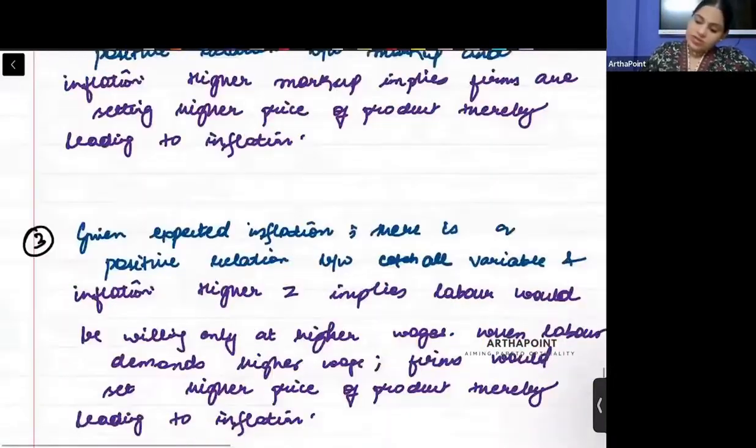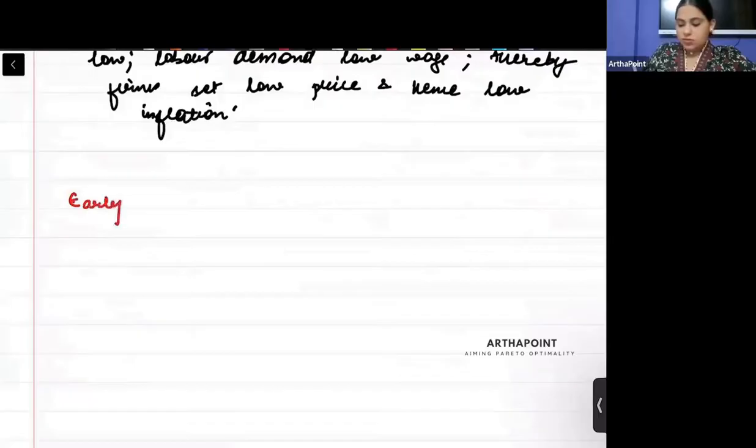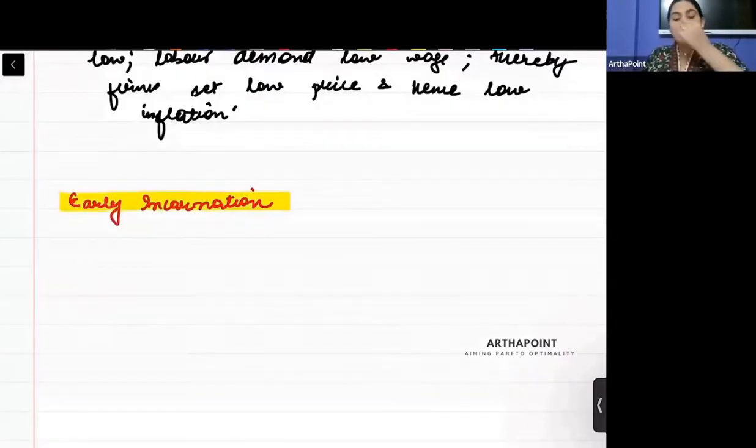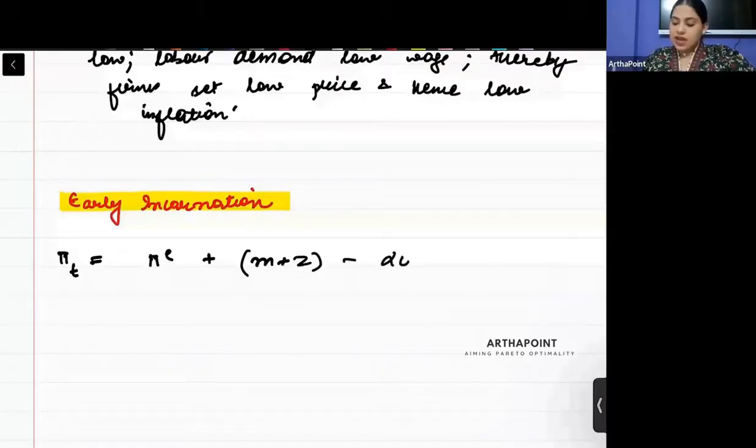Now, just write down early incarnation. What are we going to do? Suppose I tell you that people didn't know about expected inflation. So what they did is they started thinking that π^e is 0. It was only later on that they realized there is something known as expected inflation. So what we should be doing is to begin with this relation that we have derived: π_t = π^e_t + m + z - αu_t. I will put this π^e_t as 0.